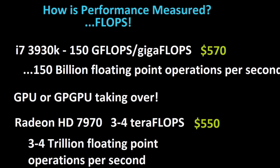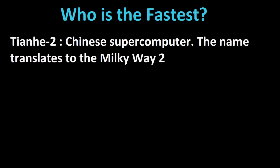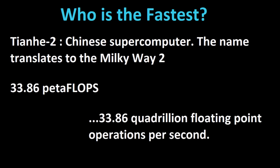Just for kicks, the number one publicly announced supercomputer is the Tianhe-2, which literally translates to Sky River but really means Milky Way 2. It performs at a peak of 33.86 petaflops — that's 33.86 quadrillion floating point operations per second.